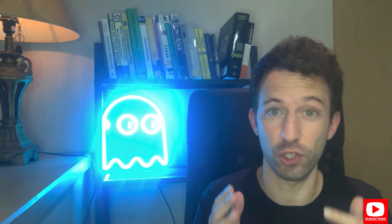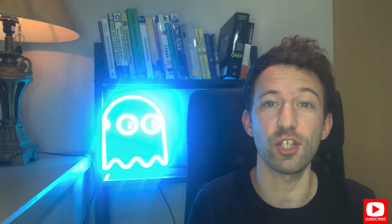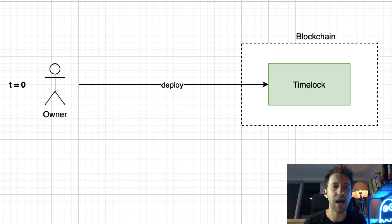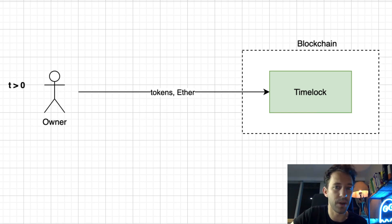That's what we will do in this video. I'm Julian, and on 'In the Blocks' I teach blockchain development. First you will have to write your timelock smart contract and then deploy it to the blockchain. When you deploy it, you will specify who is the owner of the timelock — that will be the person that can receive the funds in the future.